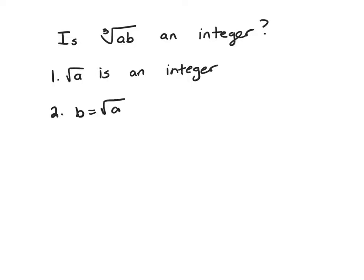We're trying to figure out if cube root of ab is an integer. Look at clue 1: square root of a is an integer. Well, that doesn't help us because it doesn't tell me anything about what b is. So that's not good.